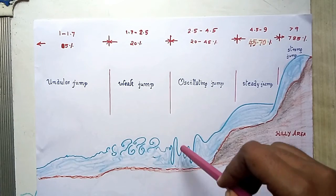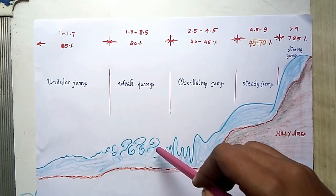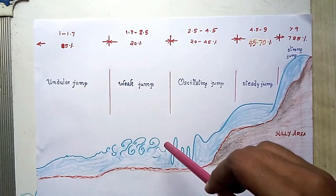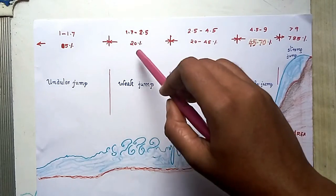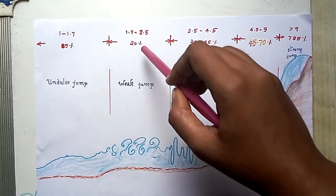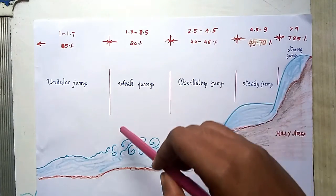Further downstream, a series of small rollers develop on the surface of the jump, but the downstream water remains smooth. The velocity throughout is uniform but the energy dissipation is less, being only about 20%. This is called a weak jump. The Froude number range is between 1.7 and 2.5.